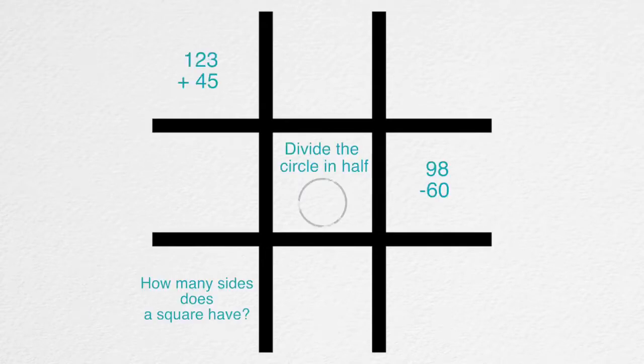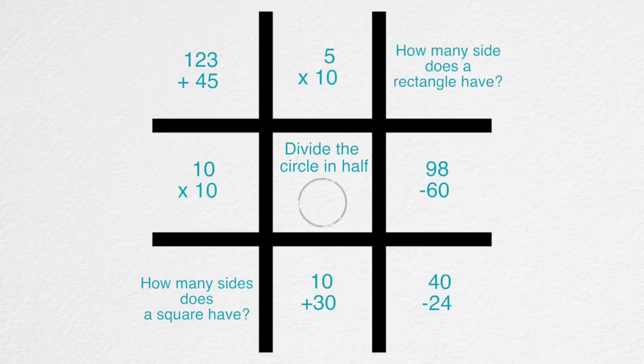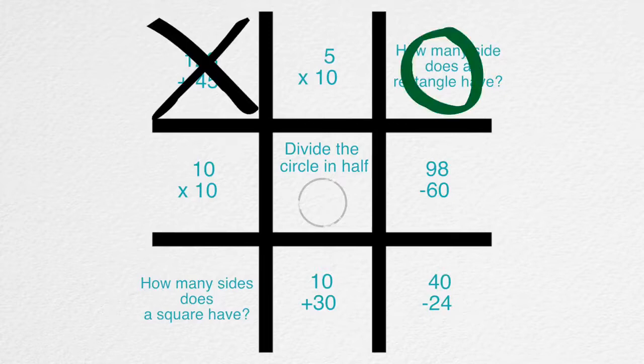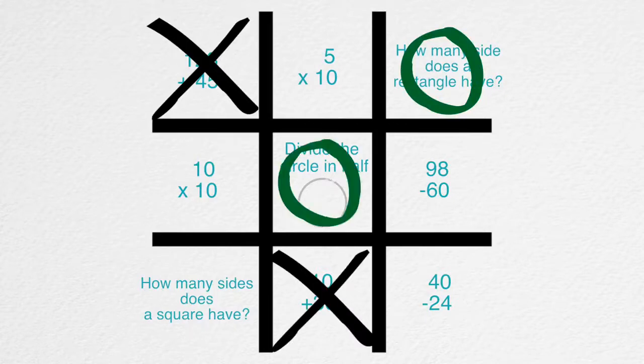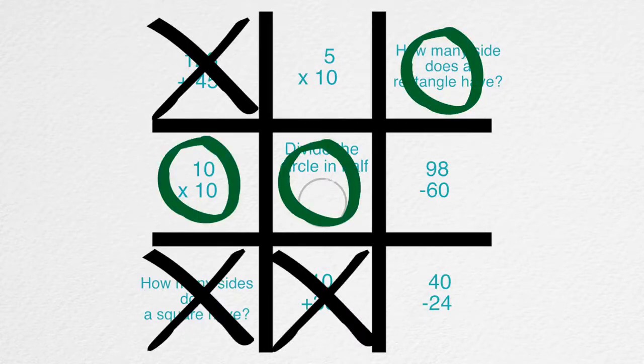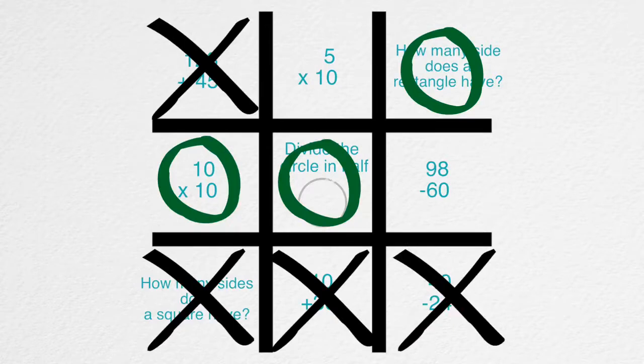You can hand out sheets to students for solo practice or divide them into pairs and encourage friendly competition. The first one to link three X's or O's by correctly completing questions wins.